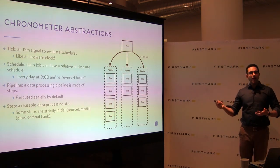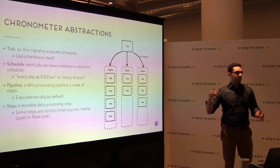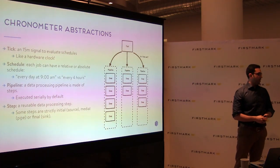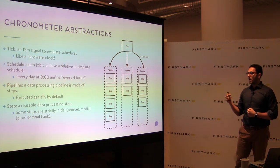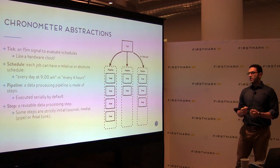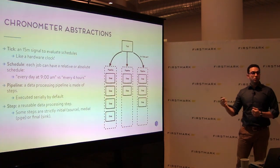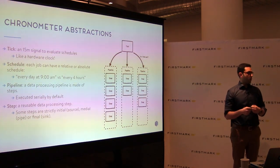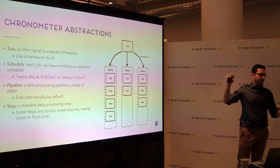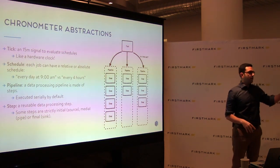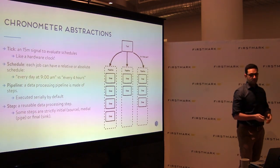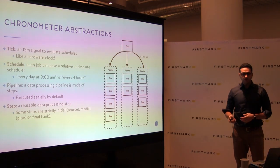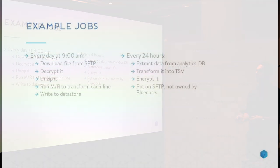There is a pipeline, and a pipeline is described by a set of steps that either get the data or manipulate it. A step can be a source, a pipe, or a sink. For example, if you're taking files from an SFTP server and loading them into a database, that involves multiple steps.